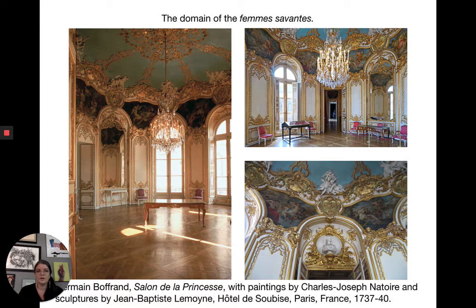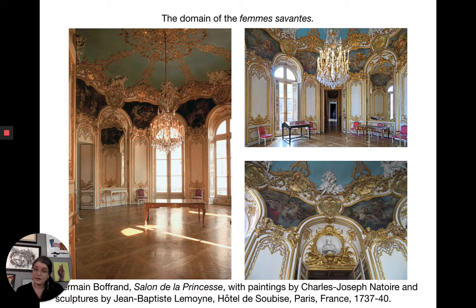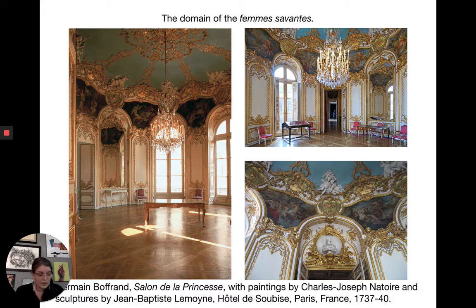Let's look at another example outside of Versailles. The Salon de la Princesse is by Germain Boffrand, with paintings by Charles-Joseph Natoire and sculptures by Jean-Baptiste Lemoyne, and it's at the Hotel de Soubise in Paris. This is a really typical room of the time. One of the things we see is that the Sun King, Louis XIV and his people, kind of set the tone as we're moving into the Rococo. But as we move further into the 18th century, we see that the centralized palace-based culture kind of becomes decentralized.